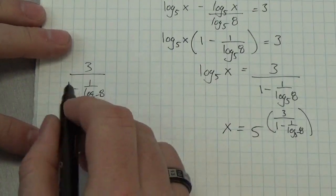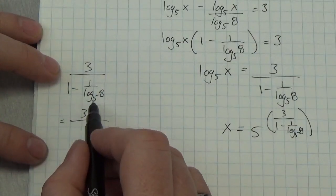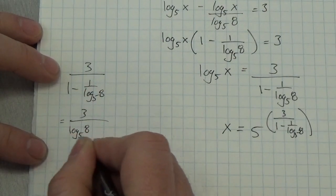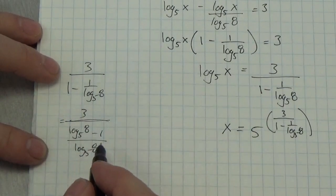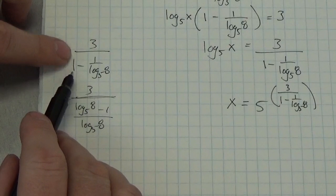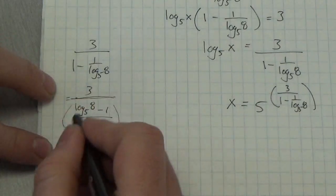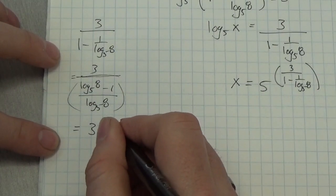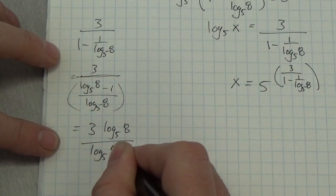In the denominator, to combine those two terms I need a common denominator, which is going to be log base 5 of 8. So I take the 1 and rewrite it as log base 5 of 8 over log base 5 of 8, then subtract 1 over log base 5 of 8. That gives me log base 5 of 8 over log base 5 of 8 minus 1. Now I've got 3 divided by a fraction, so I multiply by the reciprocal — this becomes 3 times log base 5 of 8, all over (log base 5 of 8 minus 1).